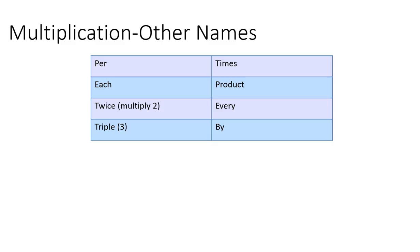All right, let's look at multiplication, some other names for multiplication. Per, each, twice, which means that you're going to multiply by 2. Triple, which means you're going to multiply by 3. Times, product, every, by.